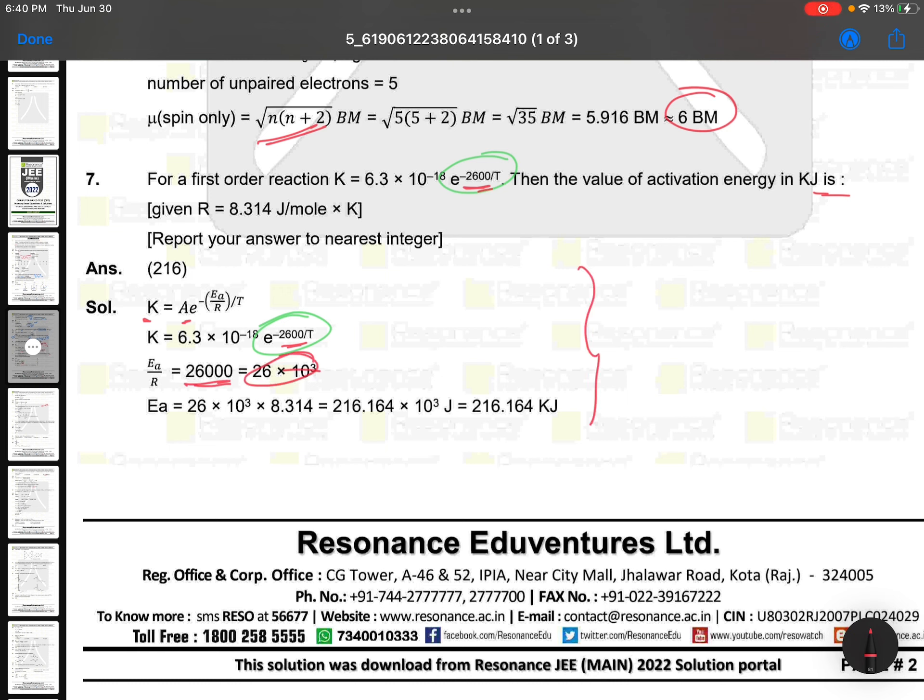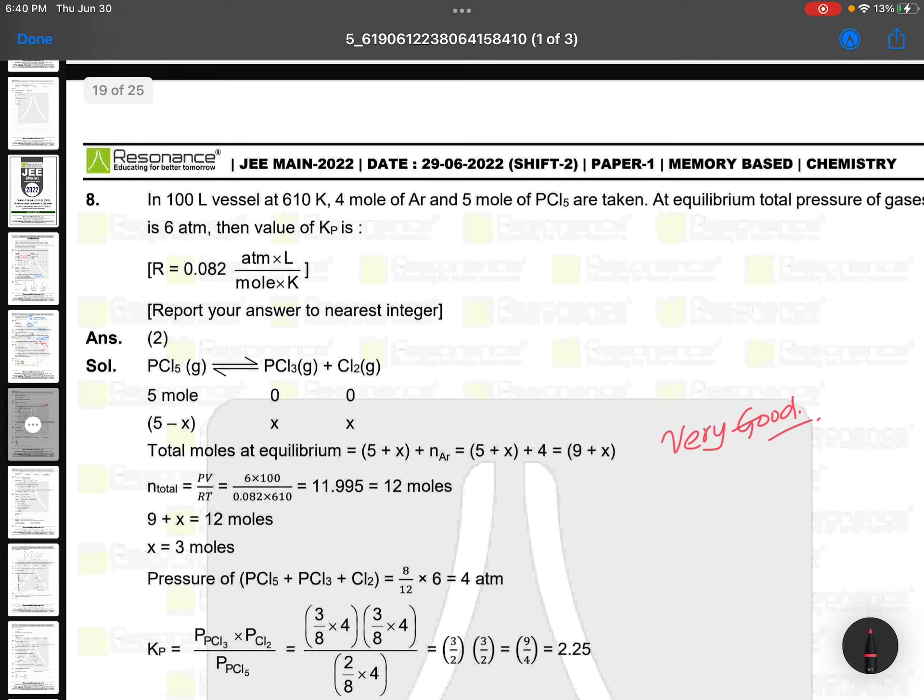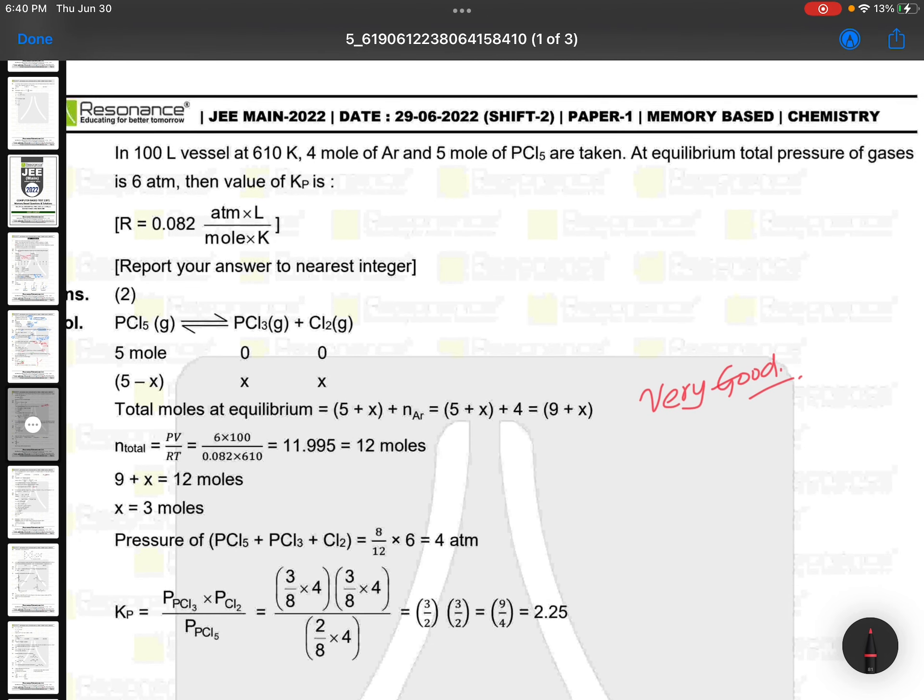Based on this you can expect questions. Previous question only, not a new question. In 100 liter flask, this is a very good question actually.